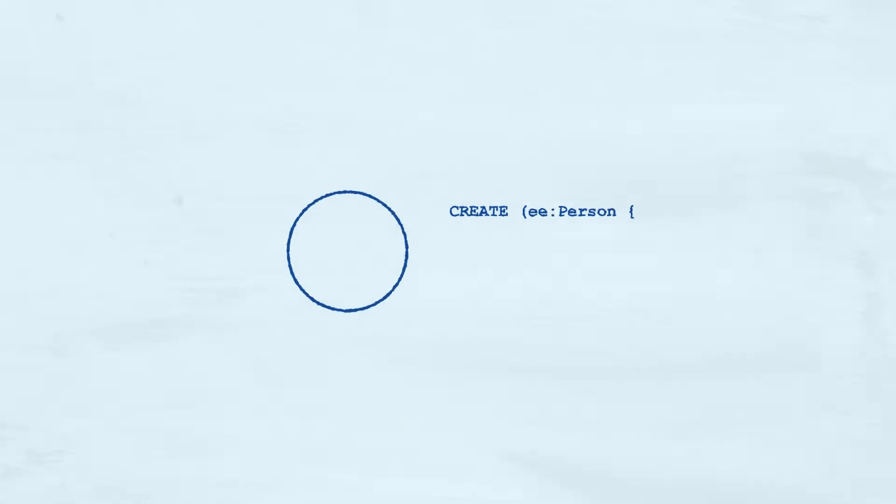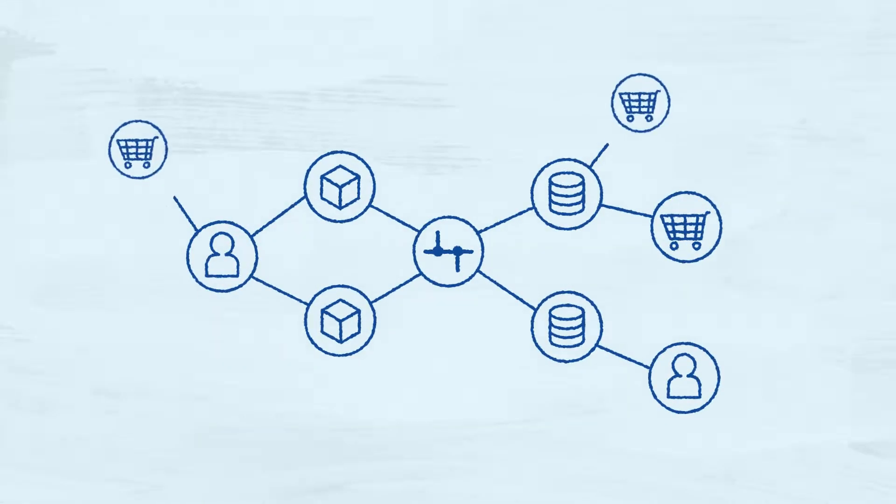Most applications deal with data points by casting them as entities: collections of information that have meaning as standalone constructs, usually an identity, and represent first-class citizens in the domain. This could be users of a social application, pieces of equipment in a telecommunications network, or steps in a complicated data processing pipeline. Whatever the use case, in the abstract, entities are connected with each other to create more complicated constructs and workflows.